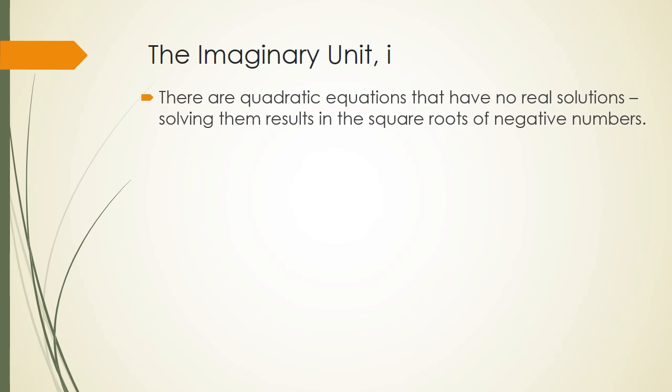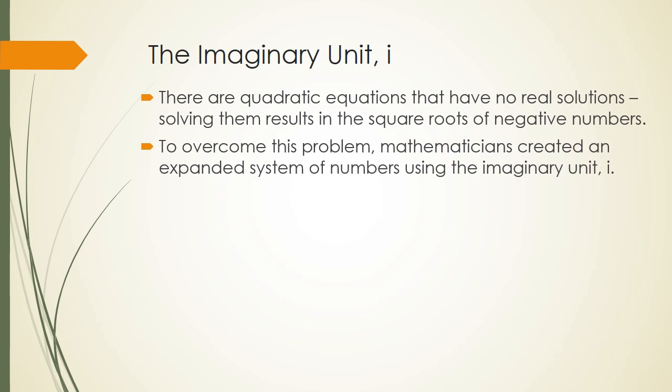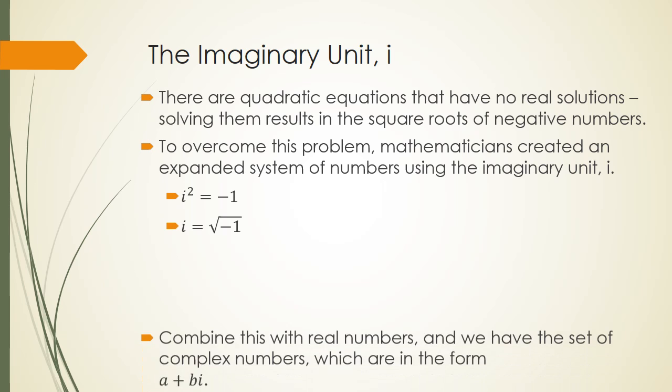We've seen there are quadratic equations that have no real solutions. Solving them results in the square roots of negative numbers. To overcome this problem, mathematicians created an expanded system of numbers using the imaginary unit known as i. The definition of i squared is that i squared equals negative 1, which means that i itself is the square root of negative 1.